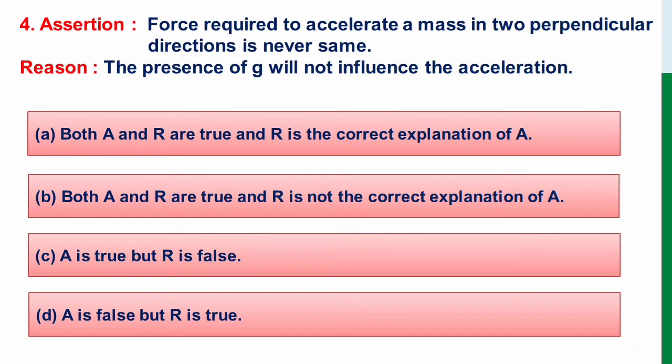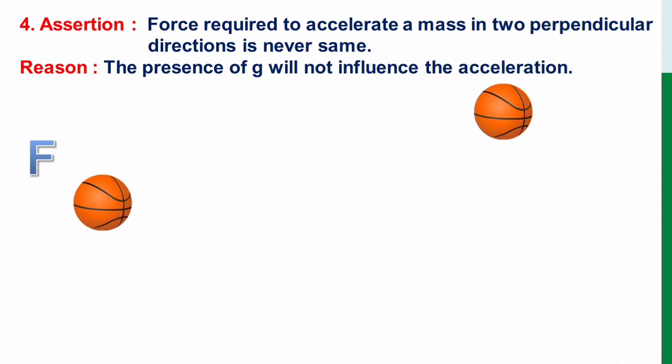Question number 4. Assertion: force required to accelerate a mass in two perpendicular directions is never same. Reason: the presence of g, that is acceleration due to gravity, will not influence the acceleration.